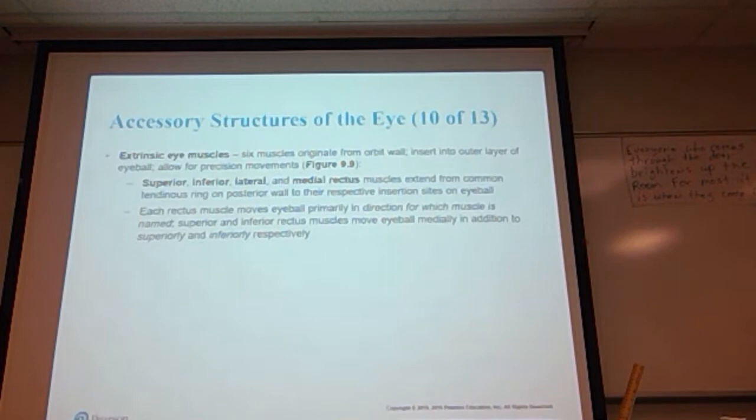The extrinsic eye muscles—there are six eye muscles attached to the eyeball. They insert on the outer layer of the eyeball and allow for very specific movements of the eye. There are four rectus muscles: superior on top, inferior on the bottom, lateral on the outside edge, medial on the inside edge. All of these muscles extend from a common tendinous ring on the posterior wall of the orbit and go to their respective insertion sites on the eyeball.